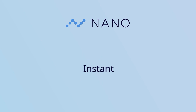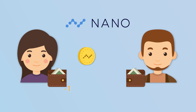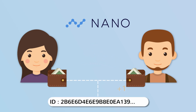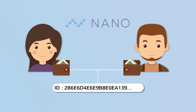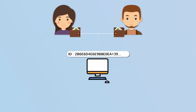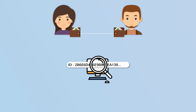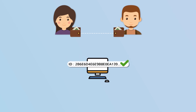Nano is an instant, zero-fee and green cryptocurrency. When you send Nano to someone, the transaction is checked by an always online computer called a representative node.